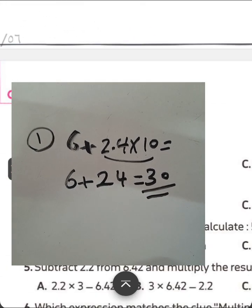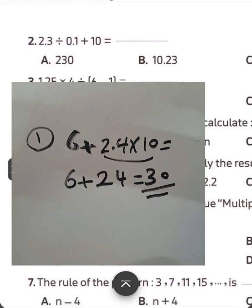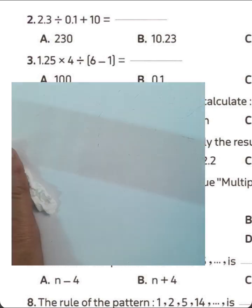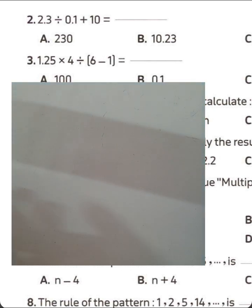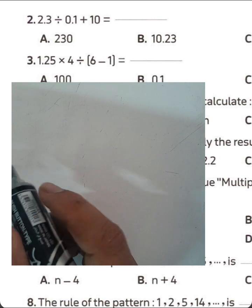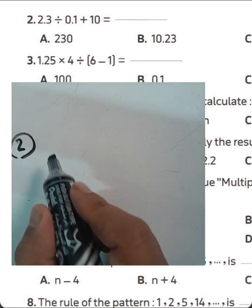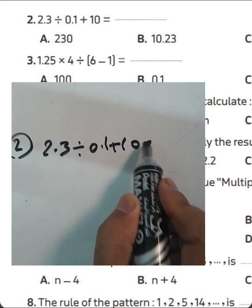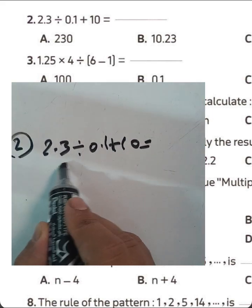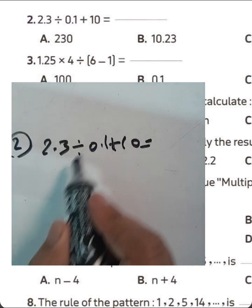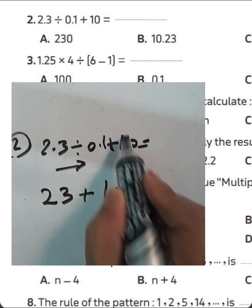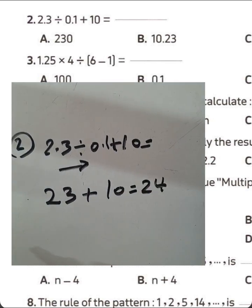Question number 2: 2.3 divided by 1 tenth plus 10. We find the division first. 2.3 divided by 0.1 — we move the point to the right-hand side — gives 23. Then 23 plus 10 equals 33.